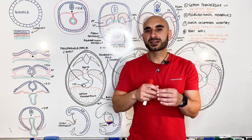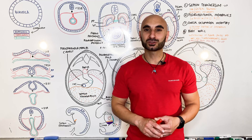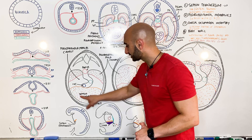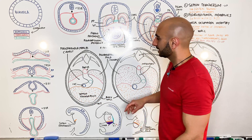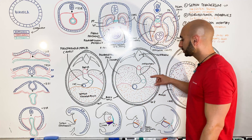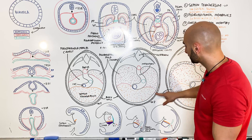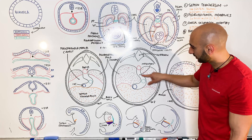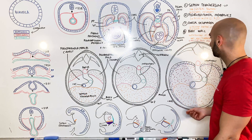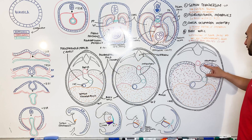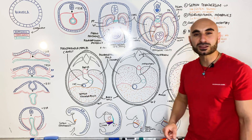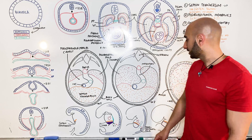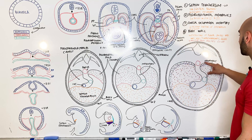To summarize: the diaphragm comes from four sources. The septum transversum, which becomes the central tendon. The pleuroperitoneal folds, which fuse with the septum transversum and the dorsal mesentery of the esophagus. The dorsal mesentery of the esophagus, within which the crura develop. And the musculature of the diaphragm, from somites at C3, C4, C5.